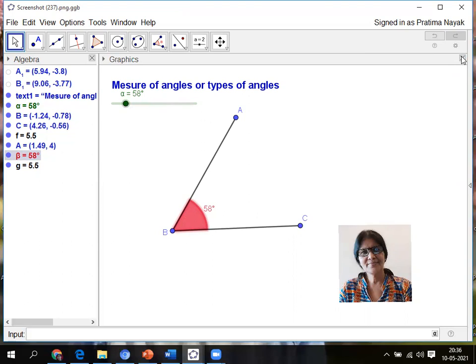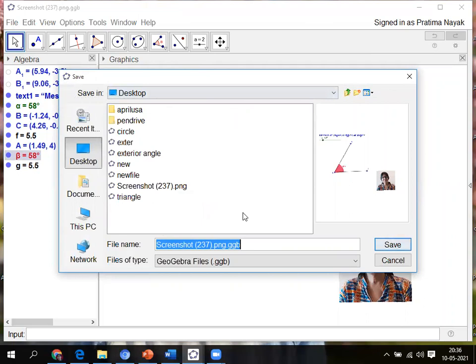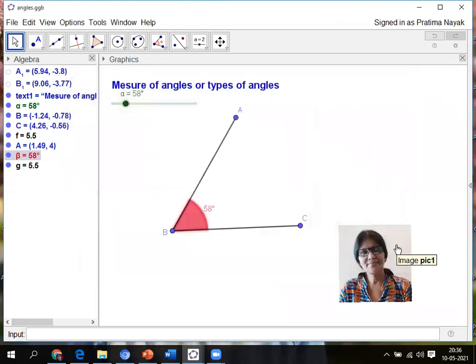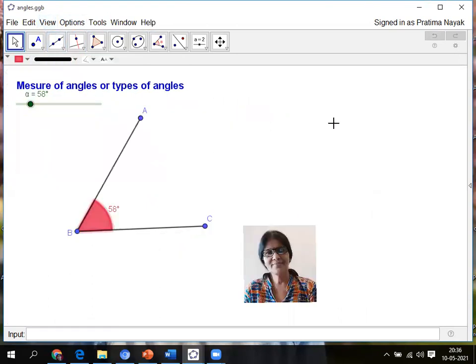After making this slider, making the angle, next I'll go for showing to the children. Of course, I'll save it. File, save as. You can save anywhere. I am saving in desktop and save as angles save. Next I'll hide the toolbar, that means algebra toolbar. So it is clear.